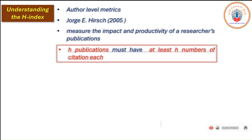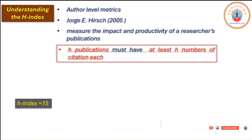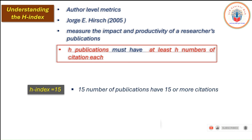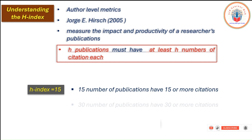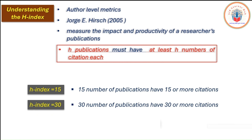The H-index implies that any H number of publications must have at least H number of citations each. For example, if an author's H-index is 15, it means 15 publications have 15 or more citations. If another author has an H-index of 30, it means 30 publications have 30 or more citations.